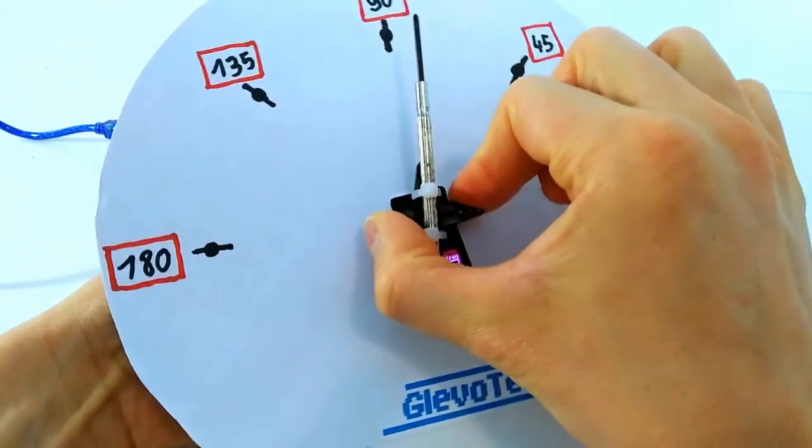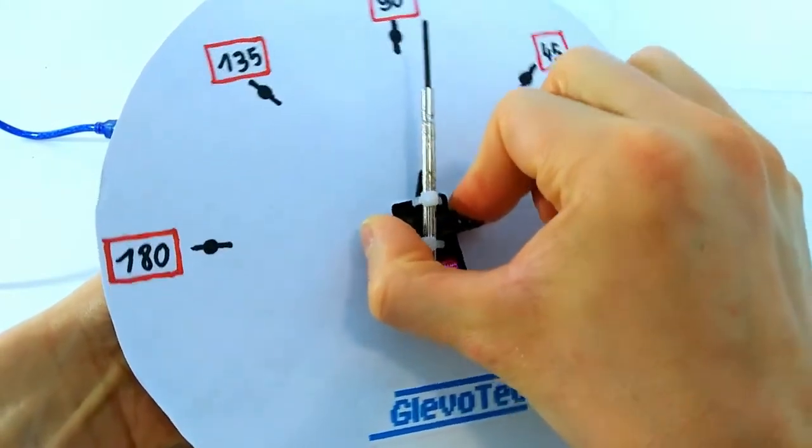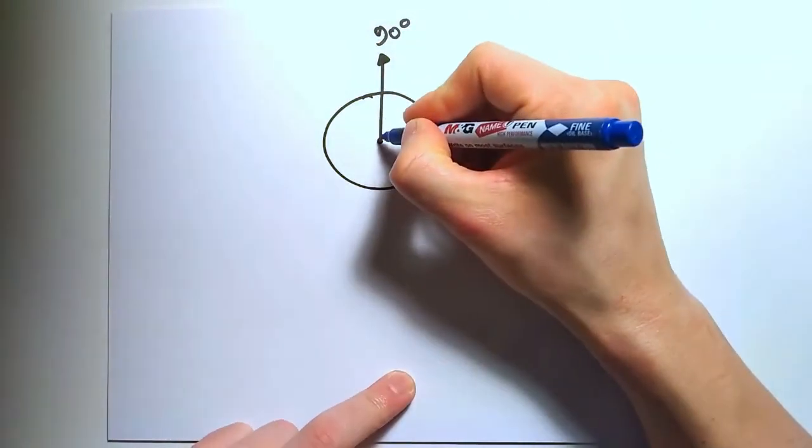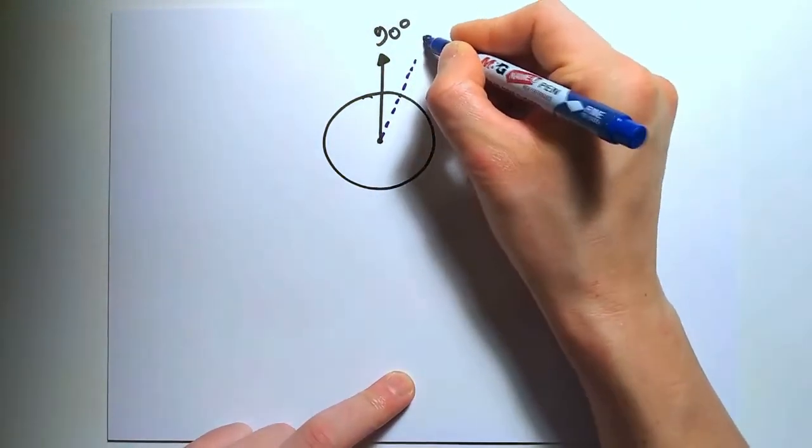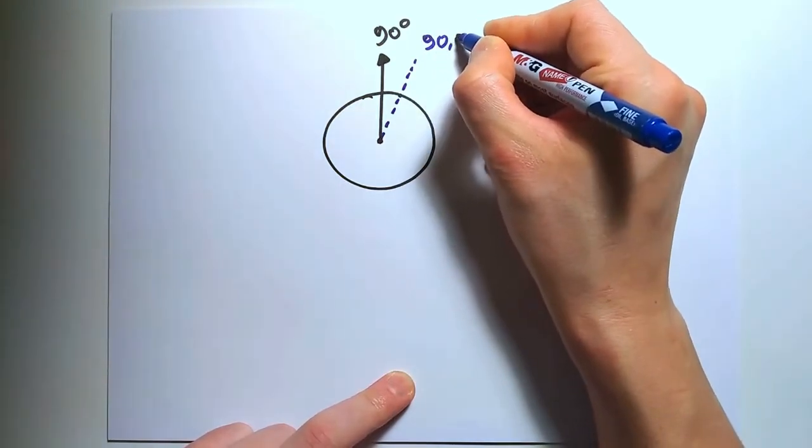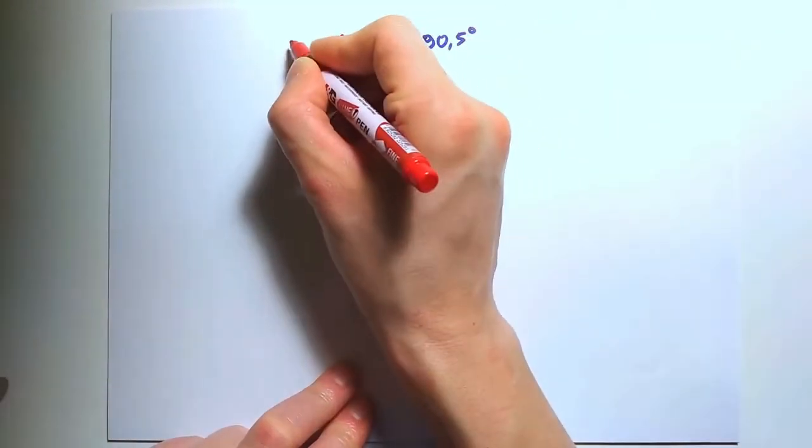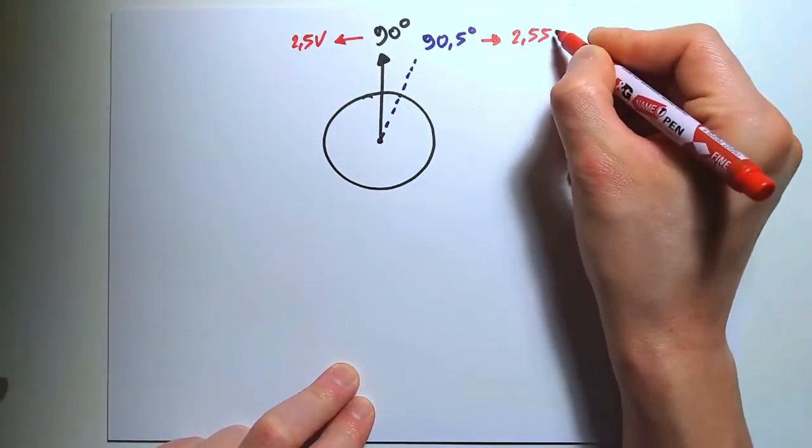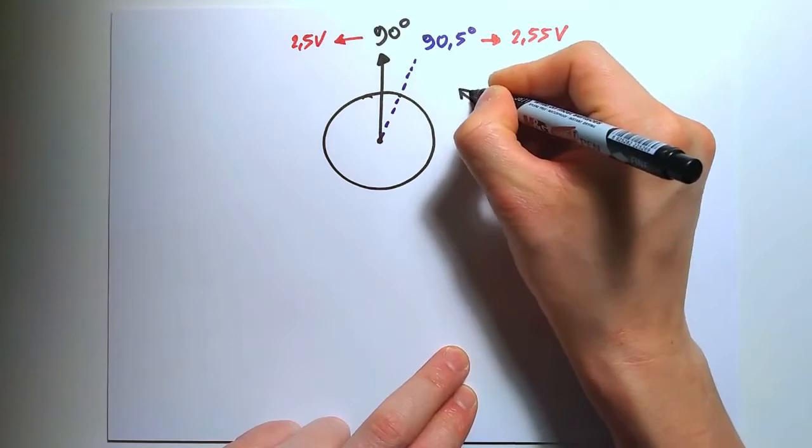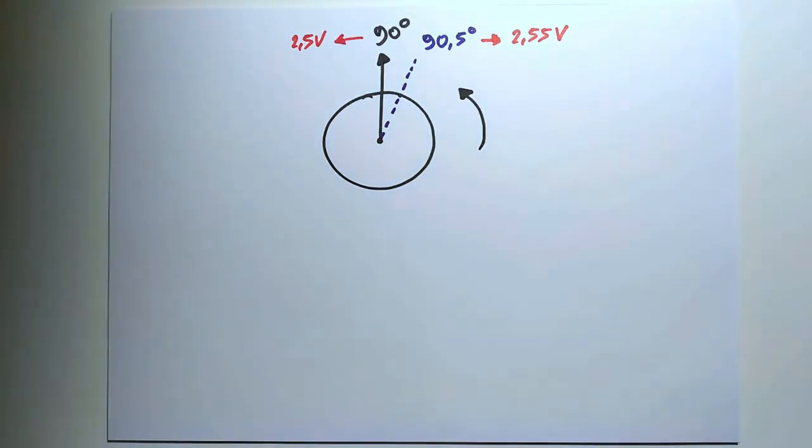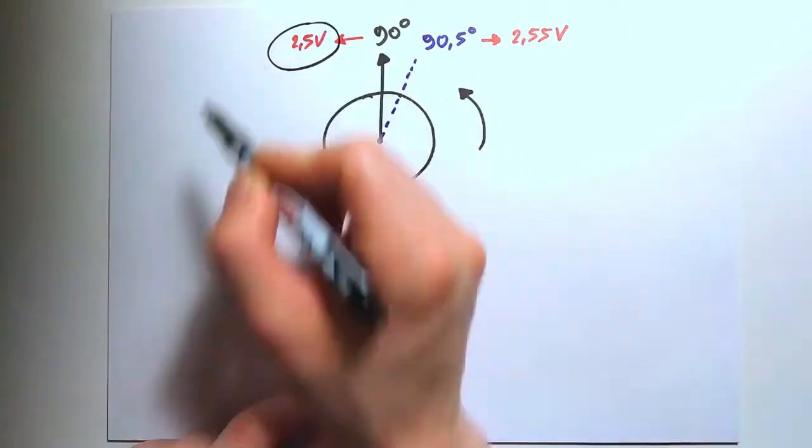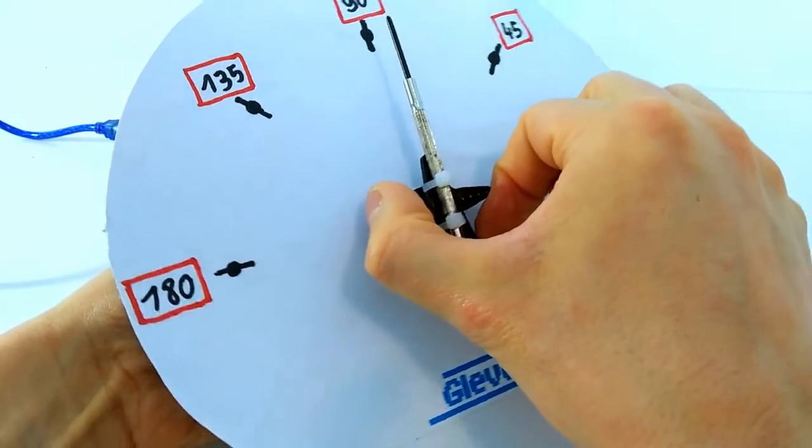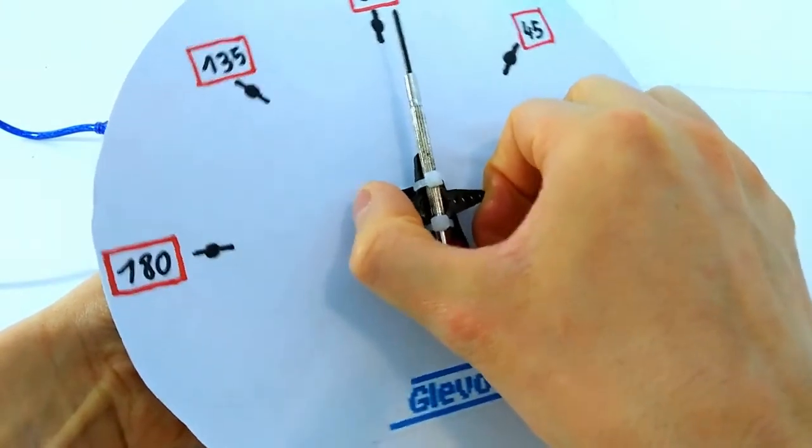If you try to force the servo out of that reached position, it will resist that movement. That's because you'll slightly turn the output shaft, changing the voltage at the potentiometer. The voltage won't match the desired position anymore, so it will either turn left or right to try to adjust itself to reach its desired voltage value again. This means that a servo will actively hold its commanded position, even when forces are applied.